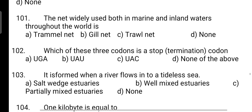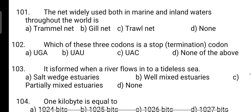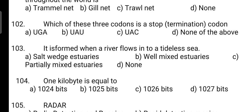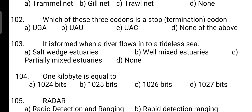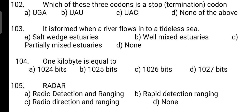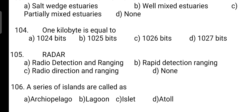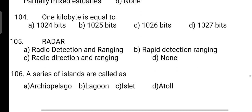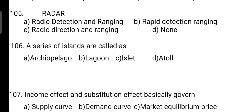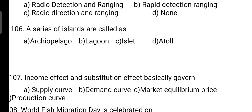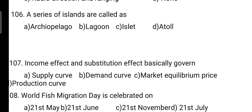One nautical mile is equivalent to: correct answer is Option A — 1.852 kilometers. Next, monosodium glutamate is added in fish products as a flavor enhancer — Option A is correct. ROM (Read-Only Memory) is non-volatile in nature — Option B is correct. The net widely used both in marine and inland water throughout the world: correct answer is Option B — it is gill net. A series of islands are called archipelago.